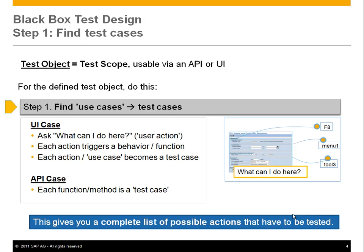The first step in black box test design is to find the test cases in the first place. If you have a certain test scope to cover, say an API or a UI, the first thing you ask yourself is: what are the use cases of this piece of software? Those become the test cases. For a UI, it could mean you look at a screen and ask as a user: what can I do here, what can I click on? Each individual action becomes a test case because you need to verify that it behaves correctly, and each of those actions triggers the behavior you need to verify.